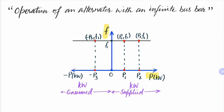We can observe that whether the active power supplied by the infinite bus bar is p1 or p2, the frequency f1 remains constant at its no-load value. Even if the active power is being consumed by the infinite bus bar, the frequency will remain constant at its no-load value, that is f1.